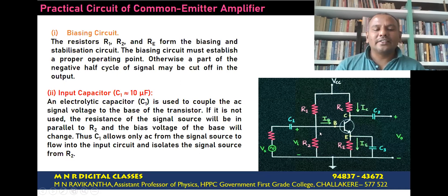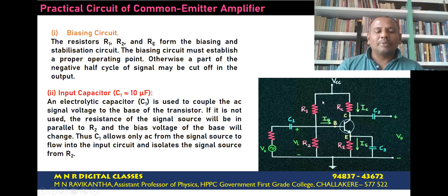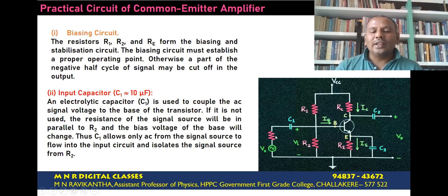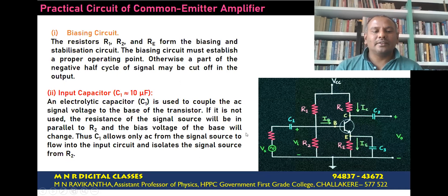If C1 is not used, the source resistance RS comes in parallel with biasing resistance R2, which leads to a reduction in the effective value of R2. Therefore, the biasing conditions get disturbed, which may lead to a shift in the operating point. C1 allows only AC from the signal source, and the AC signal will flow to the base without disturbing the biasing conditions of the transistor.